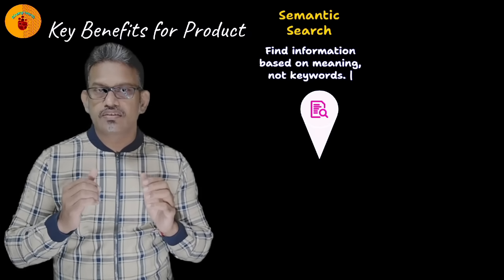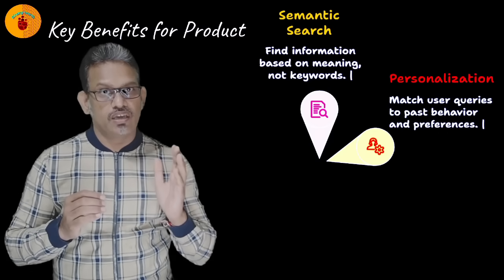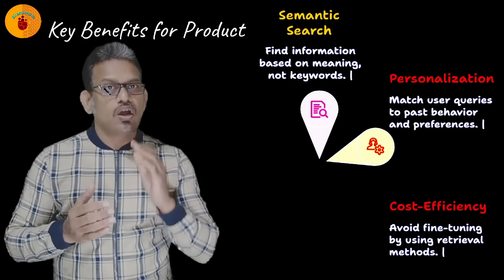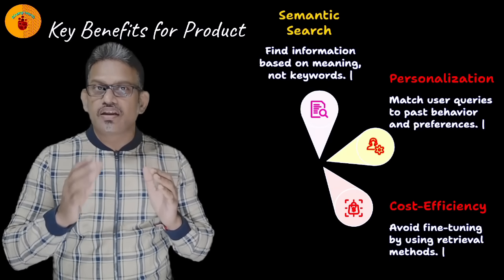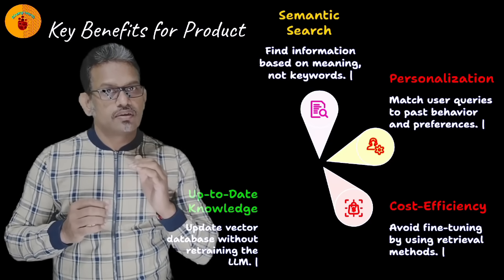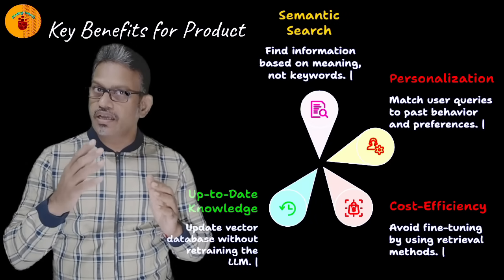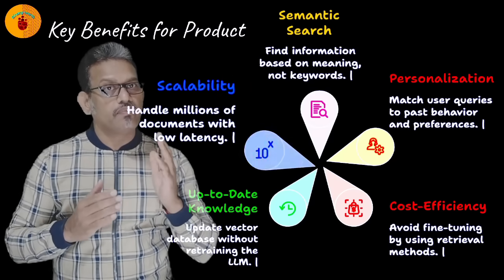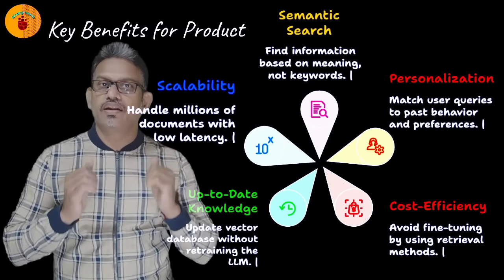Personalization: match user queries to past behavior or preferences. Cost efficiency: avoid fine-tuning, use retrieval instead. Up-to-date knowledge: update the vector DB without retraining the LLM. Scalability: handle millions of documents with low latency.